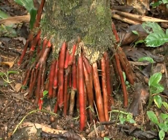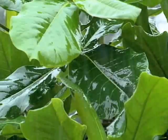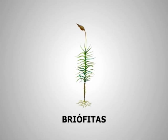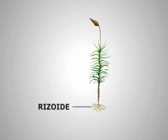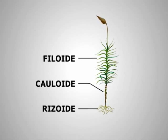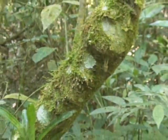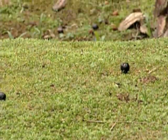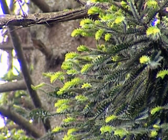O corpo de uma planta é formado por raiz, caule e folhas. No caso das briófitas, grupo de plantas que está na base da história evolutiva do reino vegetal, fala-se em risoide, cauloide e filoide. As briófitas são plantas muito pequenas, pois não possuem vasos condutores para o transporte rápido e de longas distâncias de água e de nutrientes, como possuem os demais grupos de plantas: as pteridófitas, gimnospermas e angiospermas.